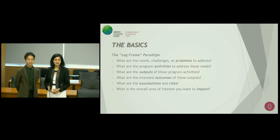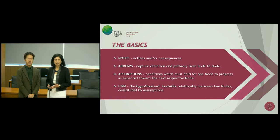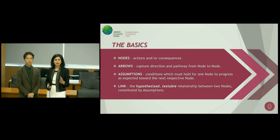What we're talking about now are the basics of a Theory of Change, and I want to familiarize you with a couple of terms. The first is nodes. In a Theory of Change, you have what are called action points and/or consequence points — these are called nodes. Then we have arrows that go from one node to the next, and these capture the direction and the pathway from one node to the next.